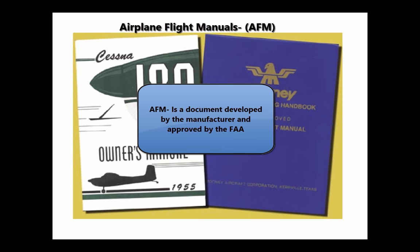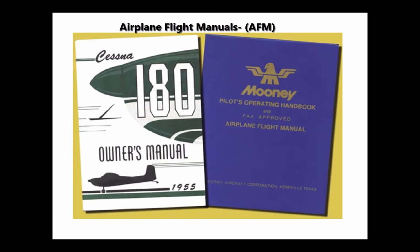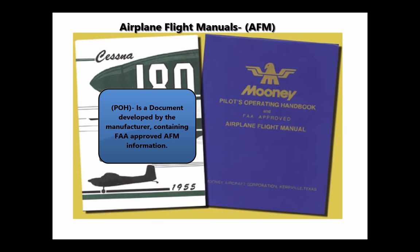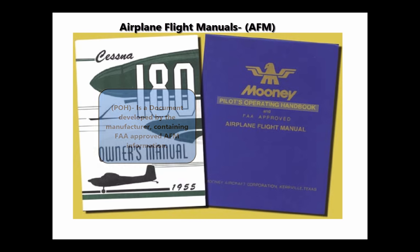An AFM is a document developed by the manufacturer and approved by the FAA. This book contains the information and instructions required to operate an aircraft safely. A pilot must comply with this information, which is specific to a particular make and model aircraft, usually by serial number. An AFM contains the operating procedures and limitations of that aircraft. Title 14 of the Code of Federal Regulations, 14 CFR Part 91, requires that pilots comply with the operating limitations specified in the approved flight manuals, markings, and placards.